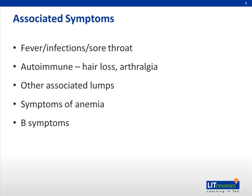Other associated lumps can be the primary lesion and are usually infective or malignant in nature. Anemia symptoms such as palpitations, tachycardia, and postural hypotension or giddiness may indicate underlying hematogenous abnormalities. Symptoms like night sweats, loss of appetite, and loss of weight indicate possible lymphoma or tuberculosis.